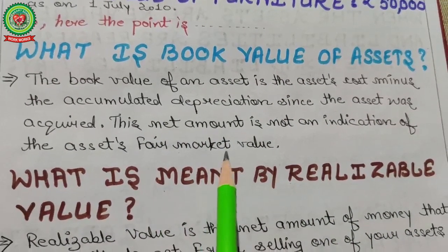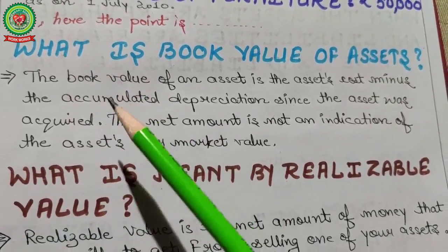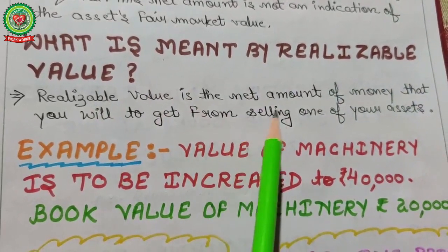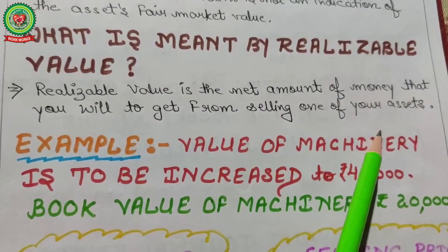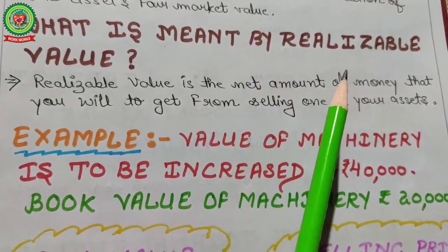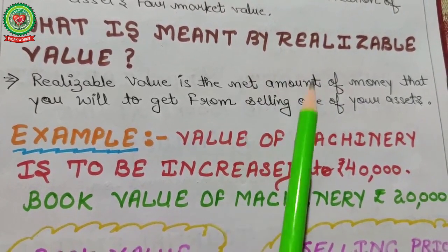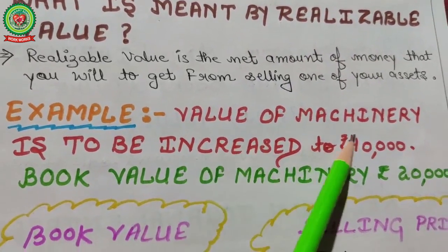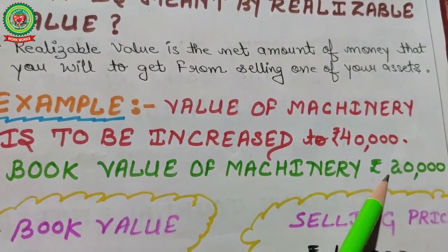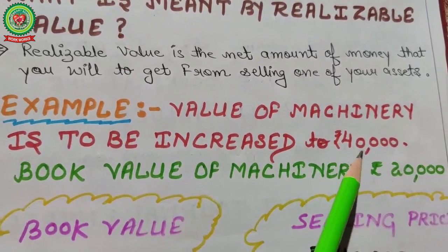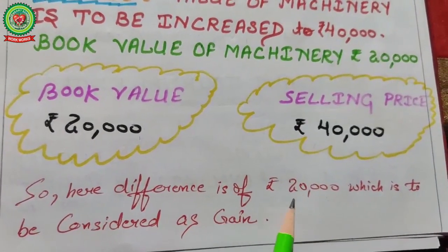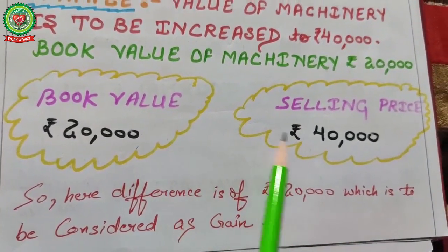The net book value of 60,000 is not an indication of the asset's fair market value, because market value changes every year. Realizable value is the net amount of money you will get from selling an asset. For example, if book value of machinery is 20,000 and it is to be increased to 40,000 (current value), the difference of 20,000 is considered as a gain — specifically a capital gain.